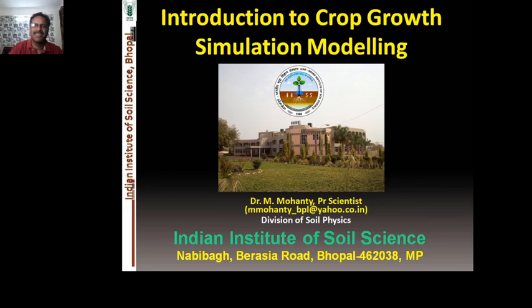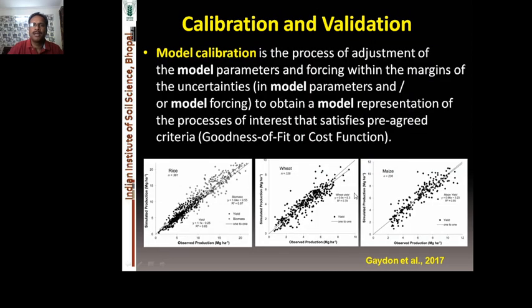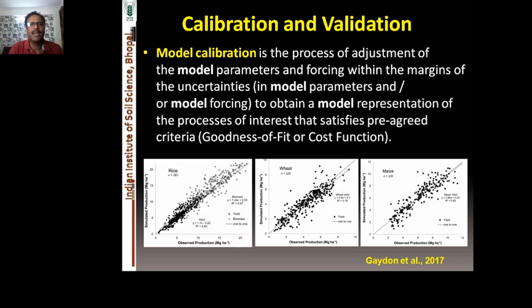Welcome back to this presentation. We continue with our classes on the introduction to crop growth simulation modeling. In this class, we are going to learn the very basics of calibration and validation. Model calibration is the process of adjustment of model parameters and forcing within the margins of uncertainties to obtain a model representation of the process of interest that satisfies agreed criteria — that is, a goodness of fit or cost function.